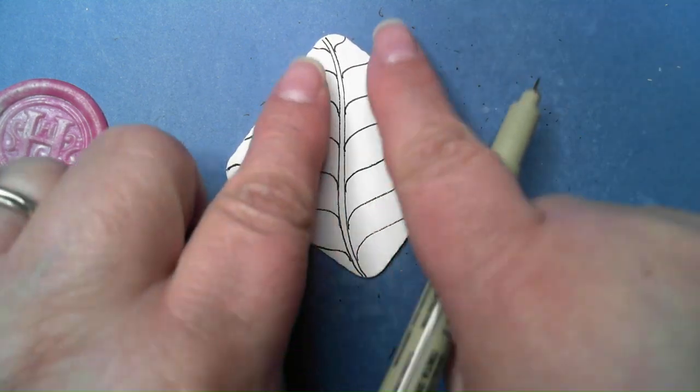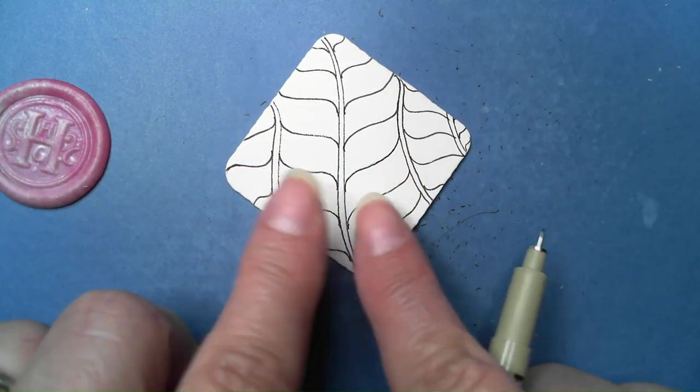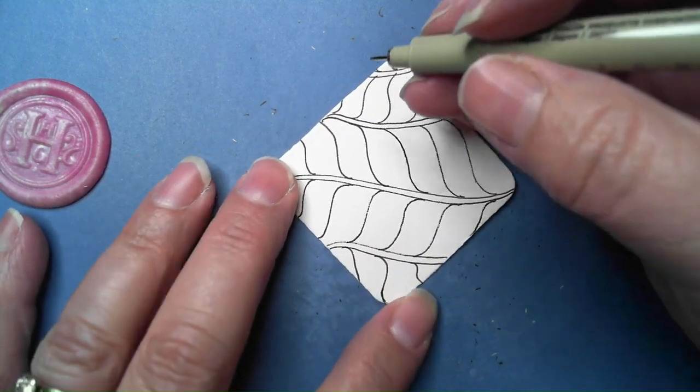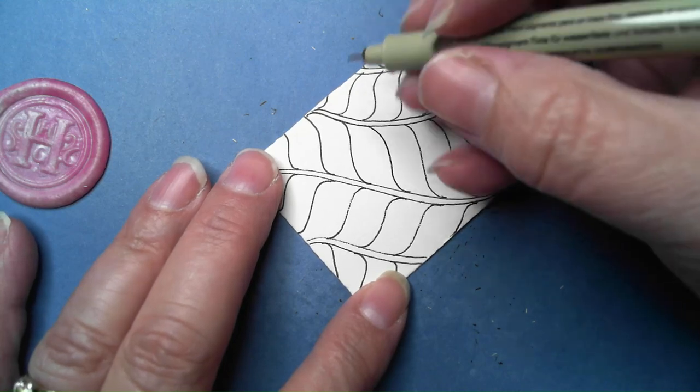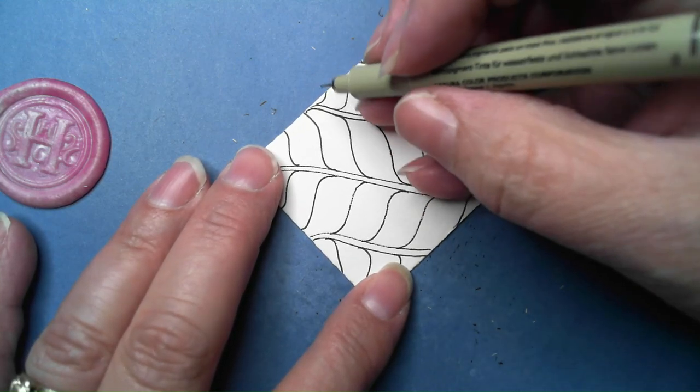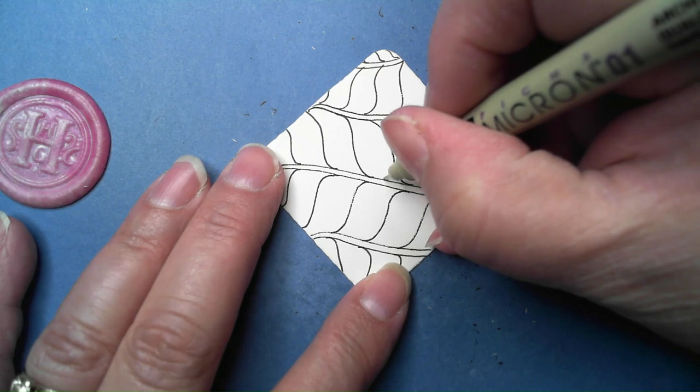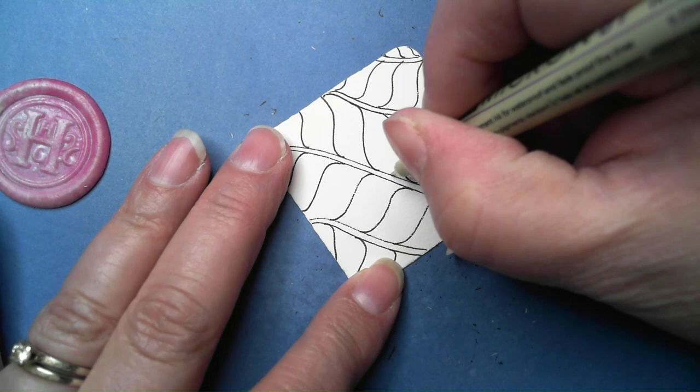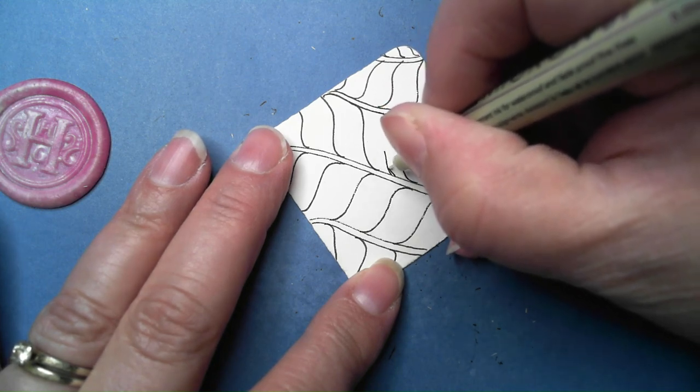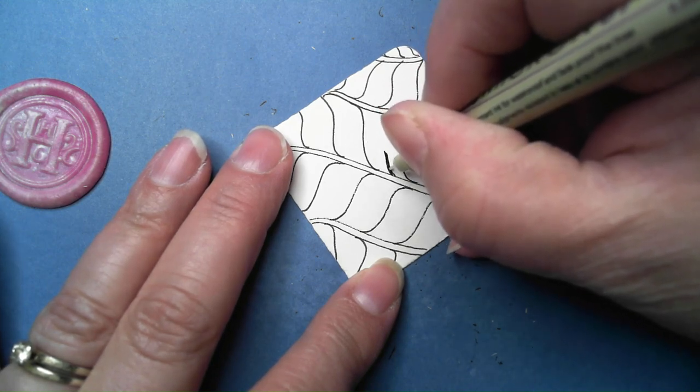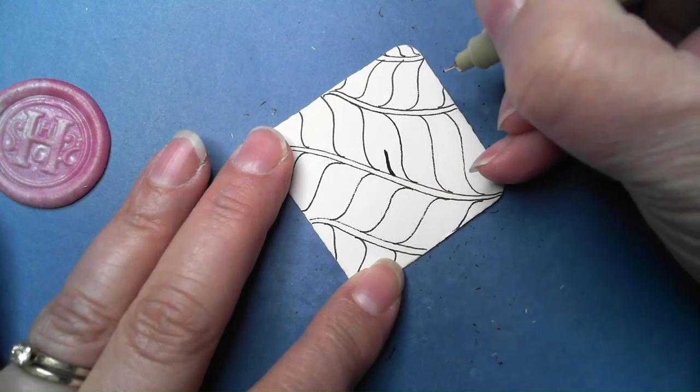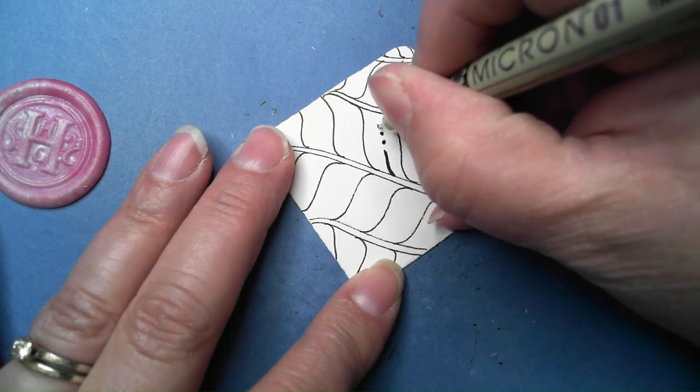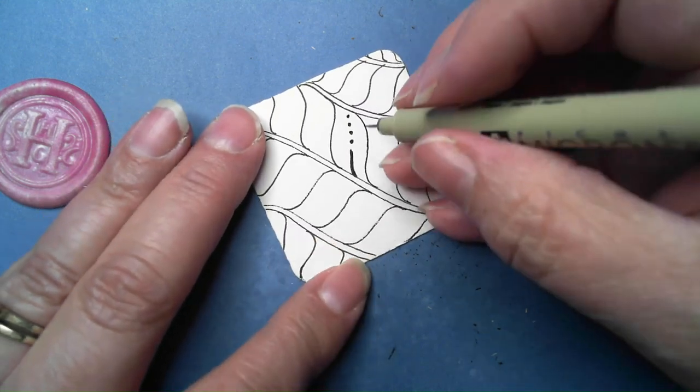You kind of get this neat leafy type of look from this one. Then the next step is really just decorating. This one is a little bit different. I'm going to start right here in the center, sort of follow the direction here, and we make a thick line. This is like a thick line dot dot dot dot, and you just go to the end.